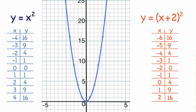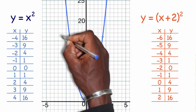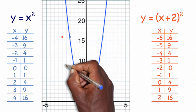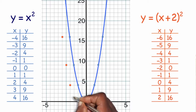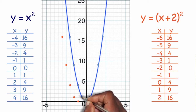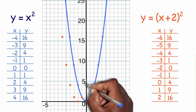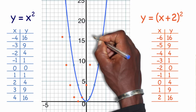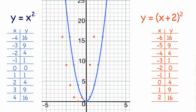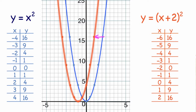Graphing the new coordinates: negative 6, 16; negative 5, 9; negative 4, 4; negative 3, 1; negative 2, 0; negative 1, 1; 0, 4; 1, 9; 2, 16. Looking at my new graph, it's apparent that the original parent graph y equals x squared has in fact been shifted to the left two spots.